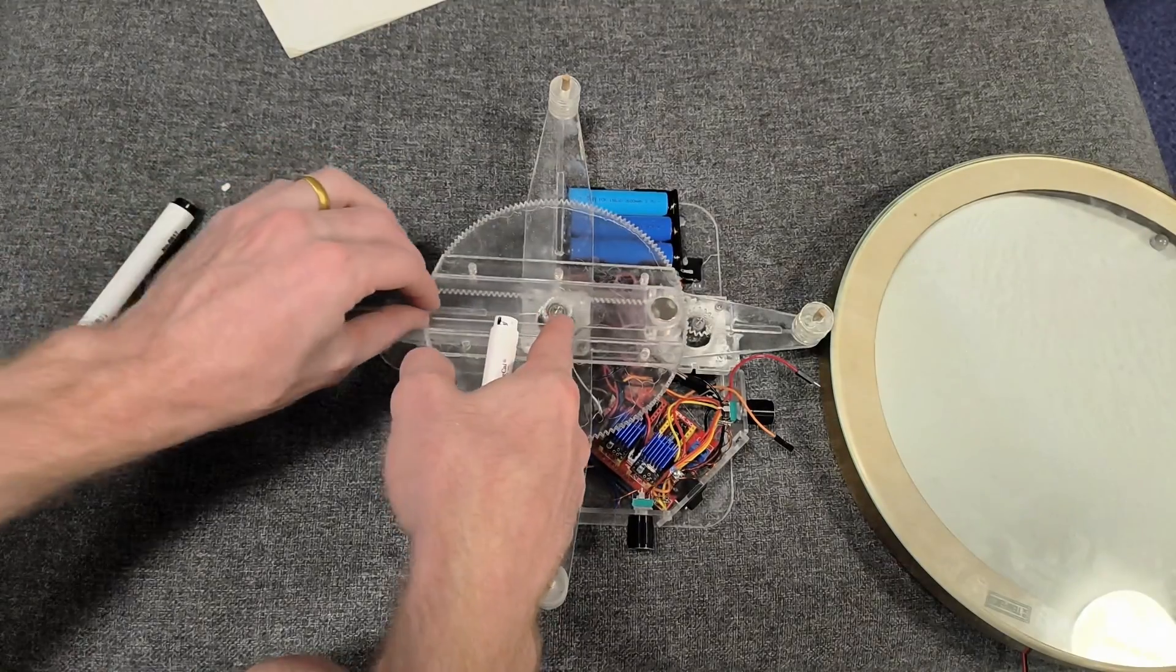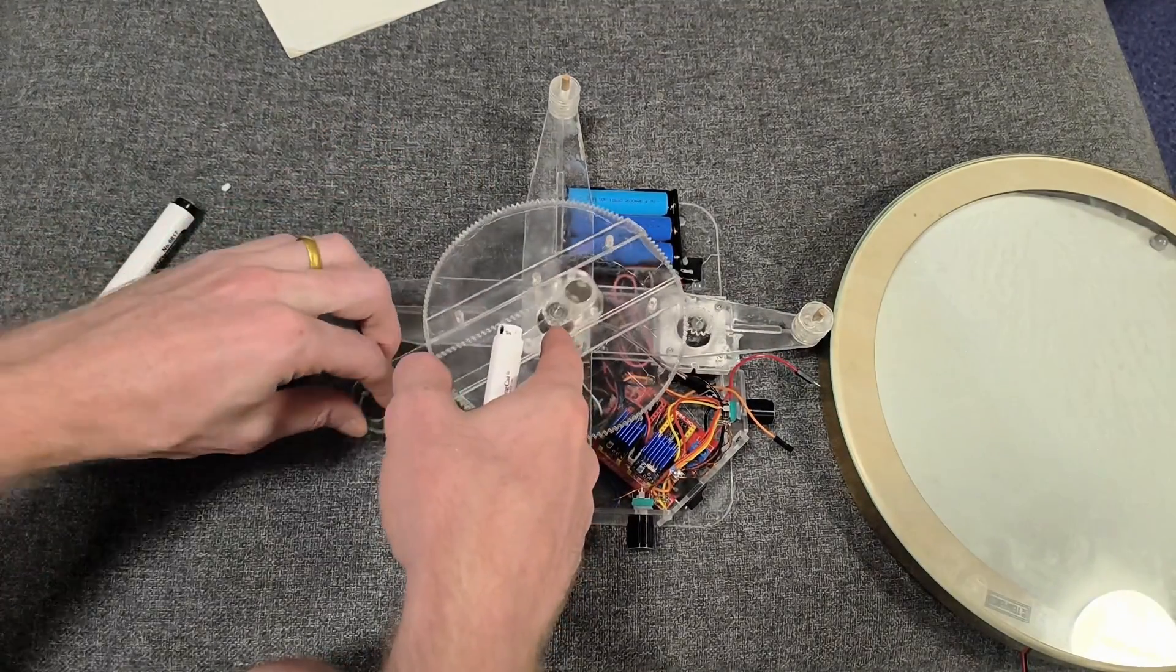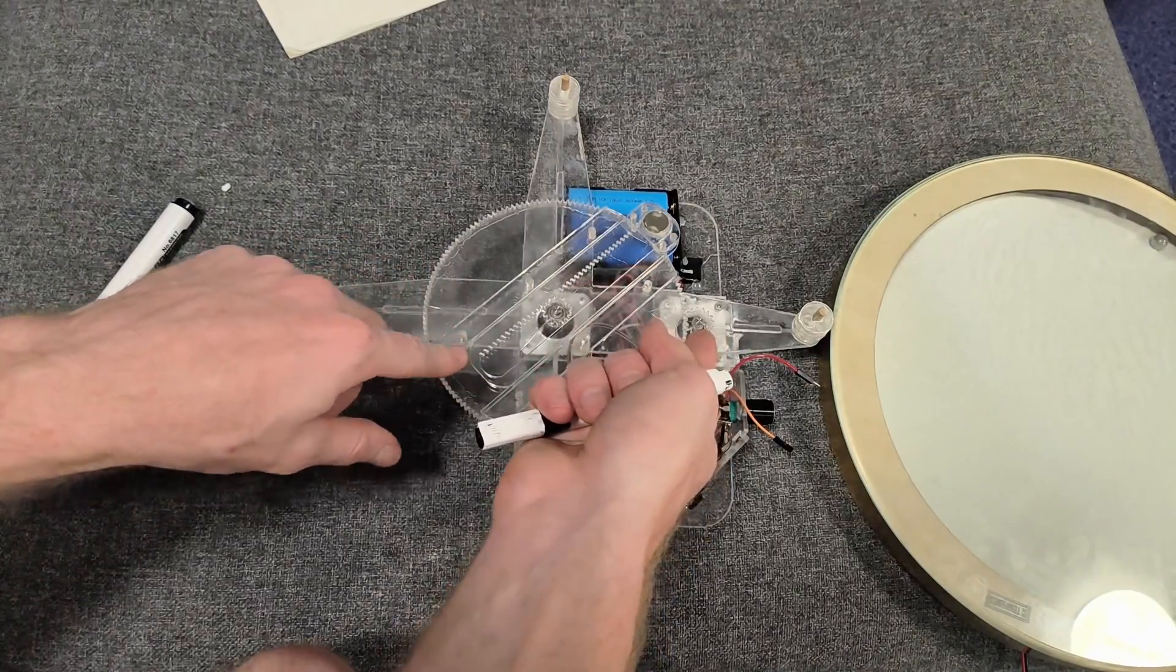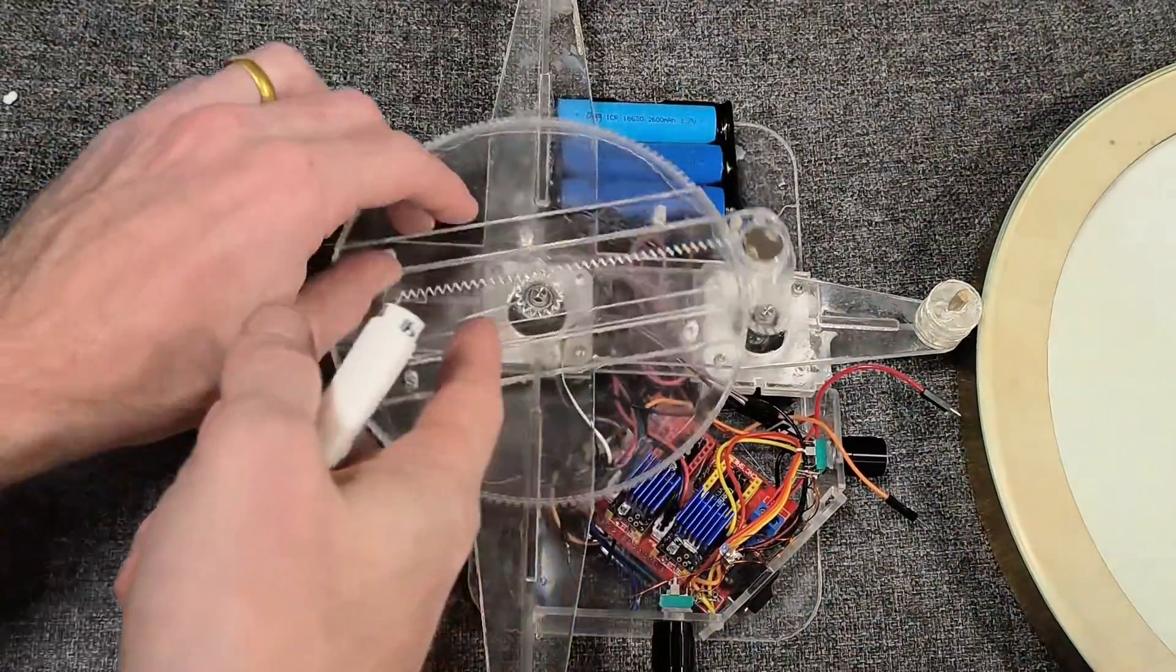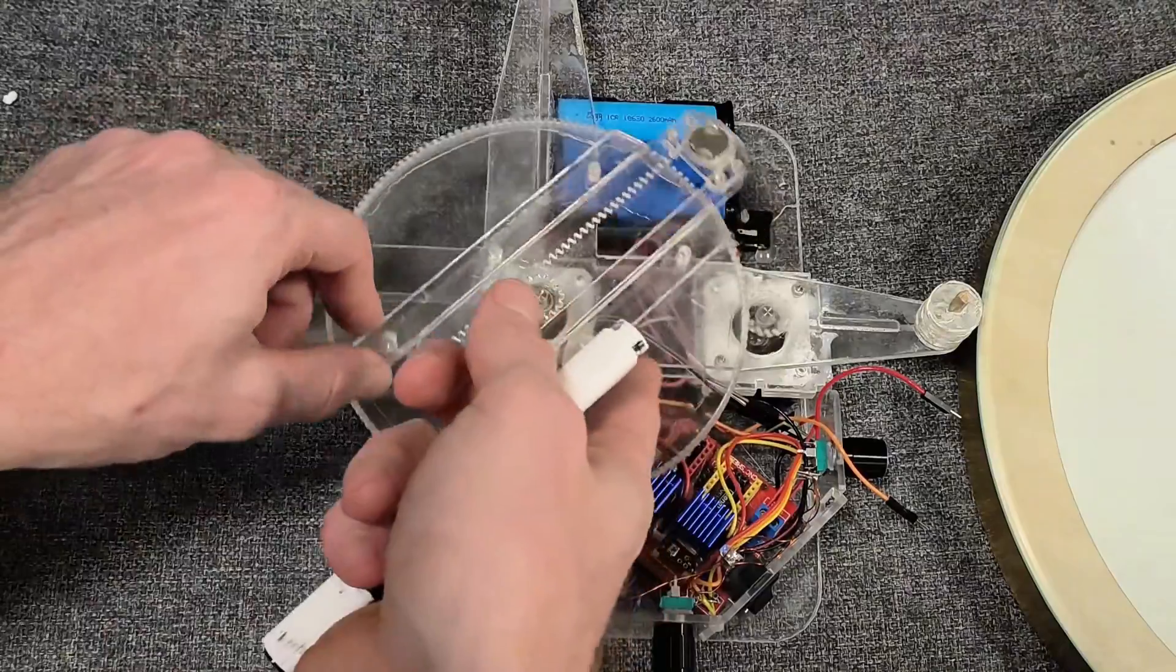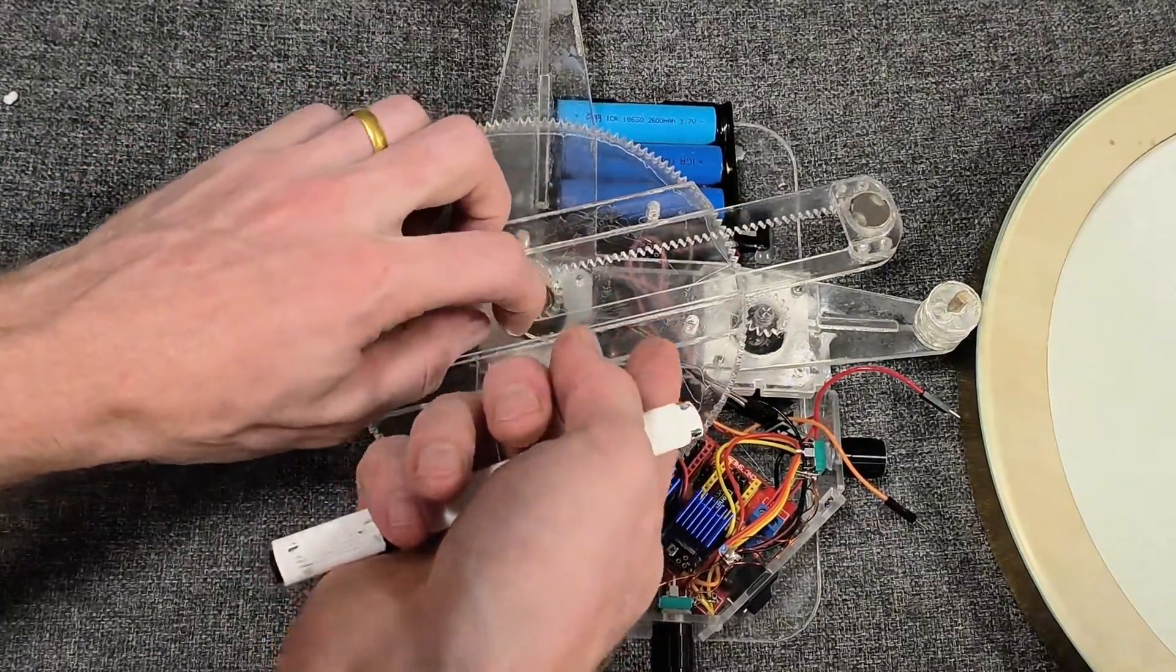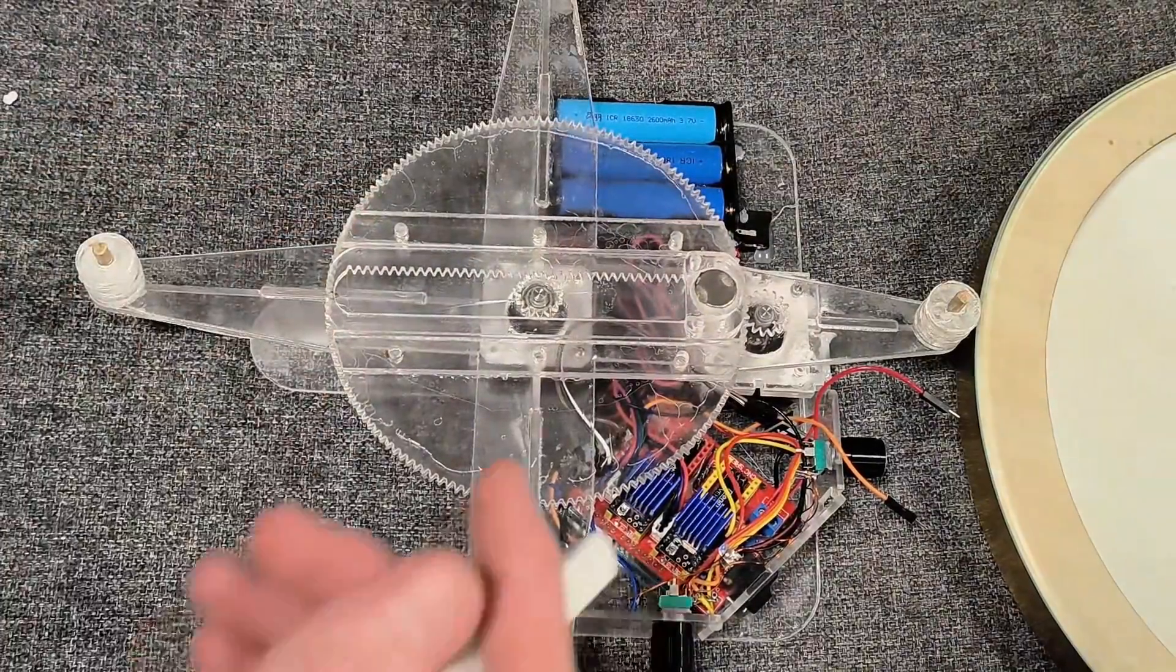Then the other stepper motor on the outside does the angle, so we can go between any point and graph any kind of function. We're interested in using the spiral graph to draw cycloid designs.